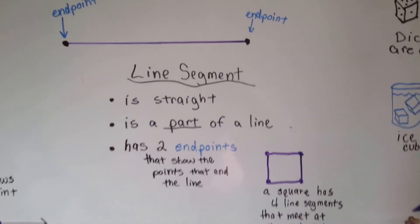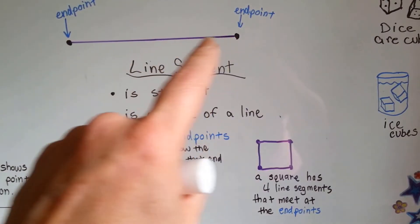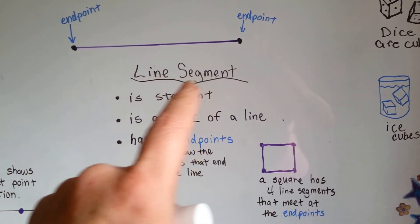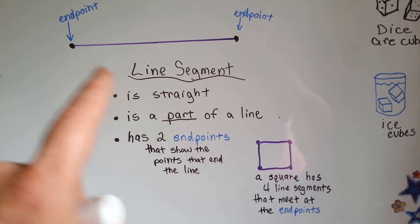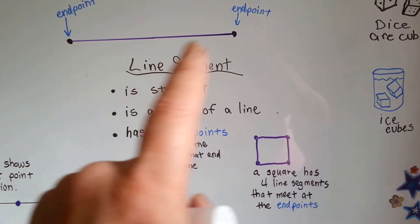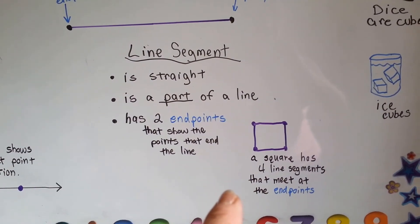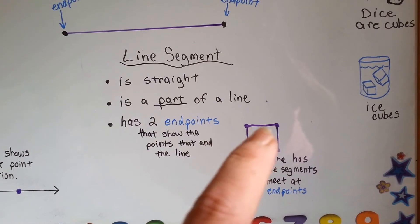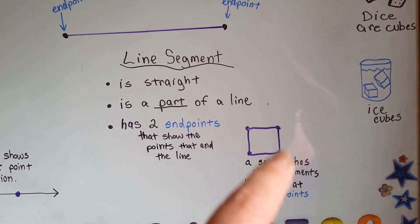Now we're on line segments. A line segment is straight. It's part of a line — not a line itself, just a segment, just a part of one. And it has two end points. The end points show the points that end the line. So a square has four line segments that meet at the end points. Here's a line segment, here's a line segment, here's a line segment, here's a line segment — and they meet at the end points.